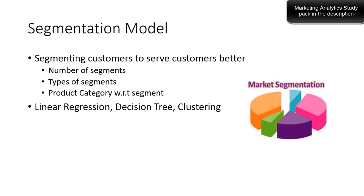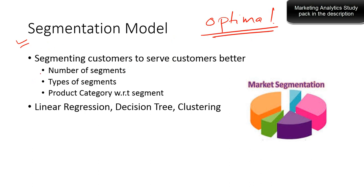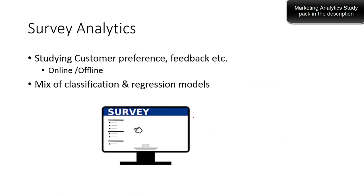Segmentation models are heavily used in marketing analytics. Anyone working in marketing needs to know how many customer segments to cater to. Having too many segments has a negative impact, but having just one segment is also insufficient. The optimal number of segments for marketing or sales activities is decided from the segmentation model. You need to know the number of segments, types of segments, and product categories with respect to different segments. Techniques include linear regression, decision trees, unsupervised learning algorithms such as clustering, principal component analysis, and factor analysis.